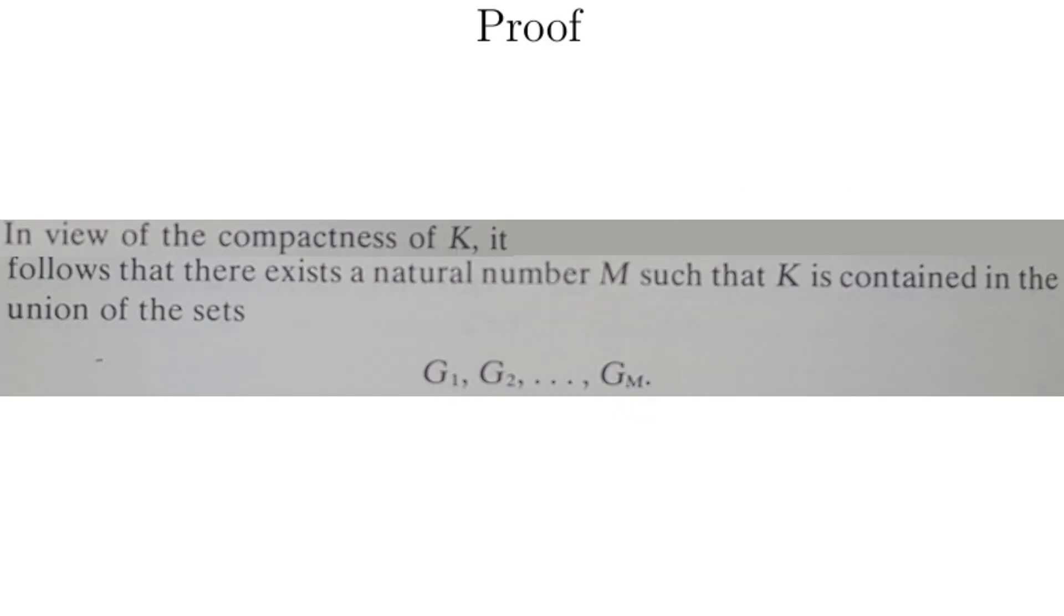Proof. In view of the compactness of K, it follows that there exists a natural number M such that K is contained in the union of the sets G_1, G_2, and so on G_M. We are now using what we assumed, that K is compact. In general when proving things, it is a must to use the things that you assume. That is what the statement is doing. We are using the compactness of K.